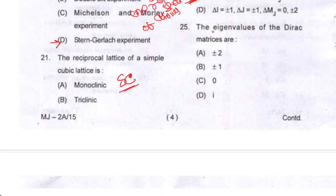Question number twenty-five: the eigenvalues of the Dirac matrices are +1 and −1. So option B is your correct option.